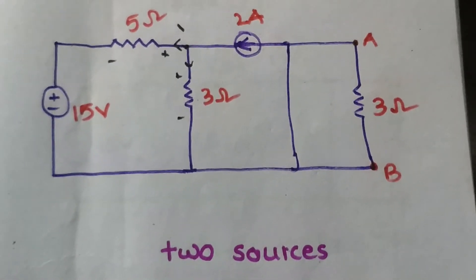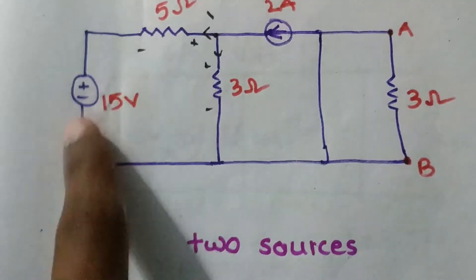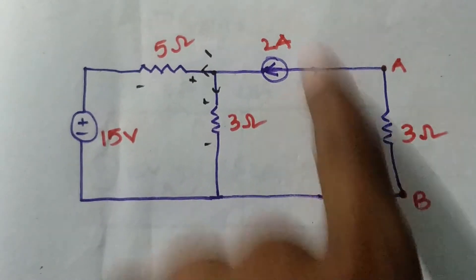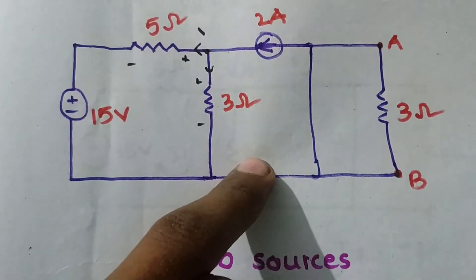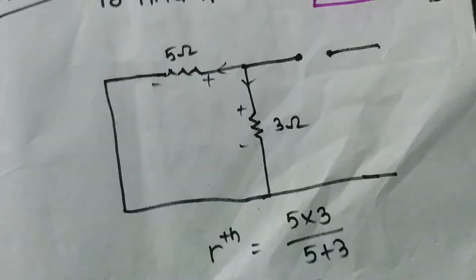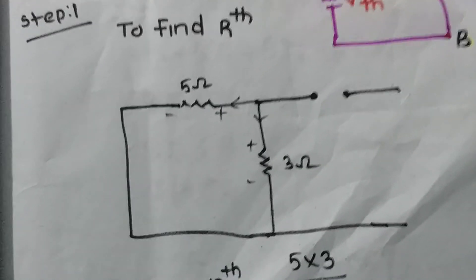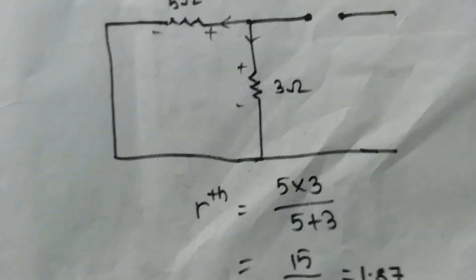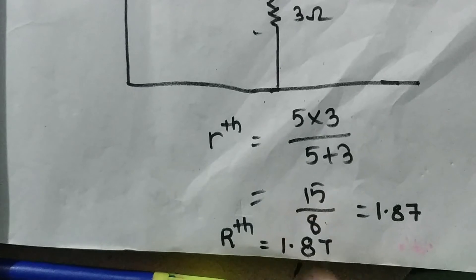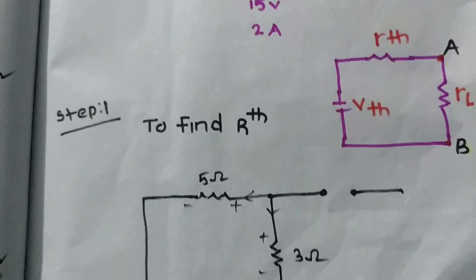To find the Rth value, we should short circuit the voltage sources and open circuit the current source. Then there are two remaining resistances: 5 ohms and 3 ohms. These two are in parallel, so we calculate 5 into 3 divided by 5 plus 3, and the Rth value is 1.87 ohms.